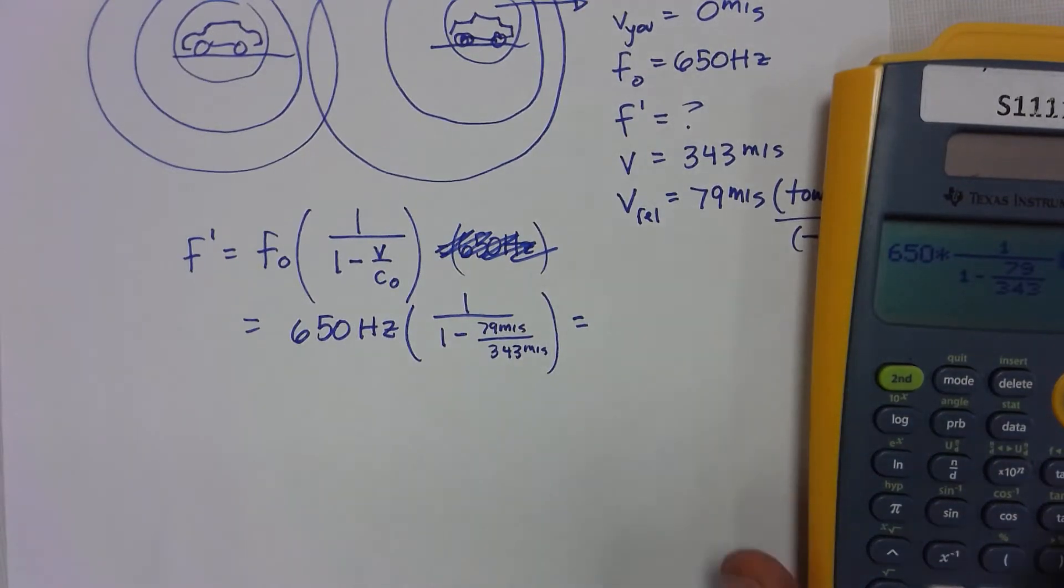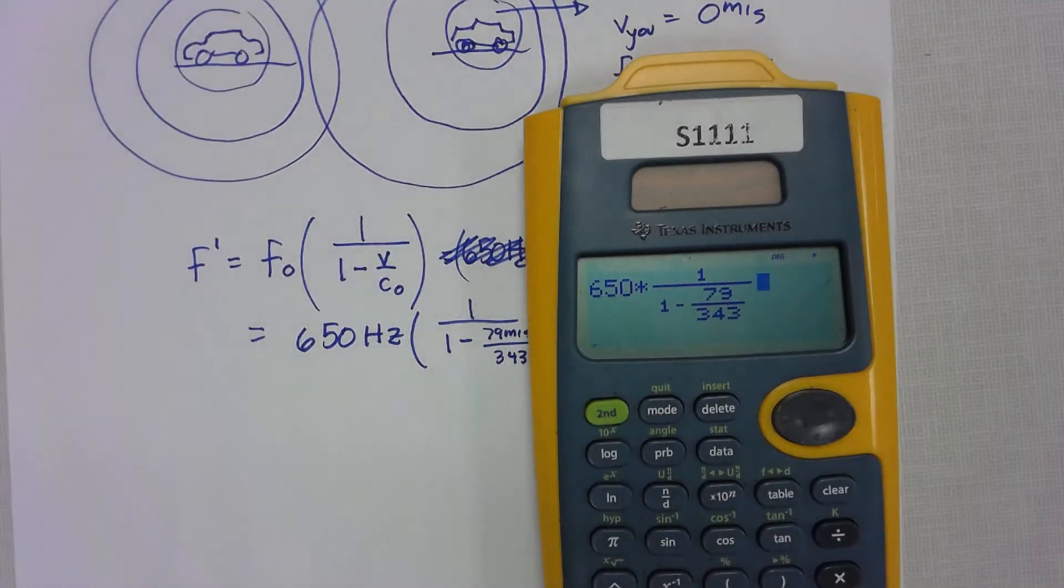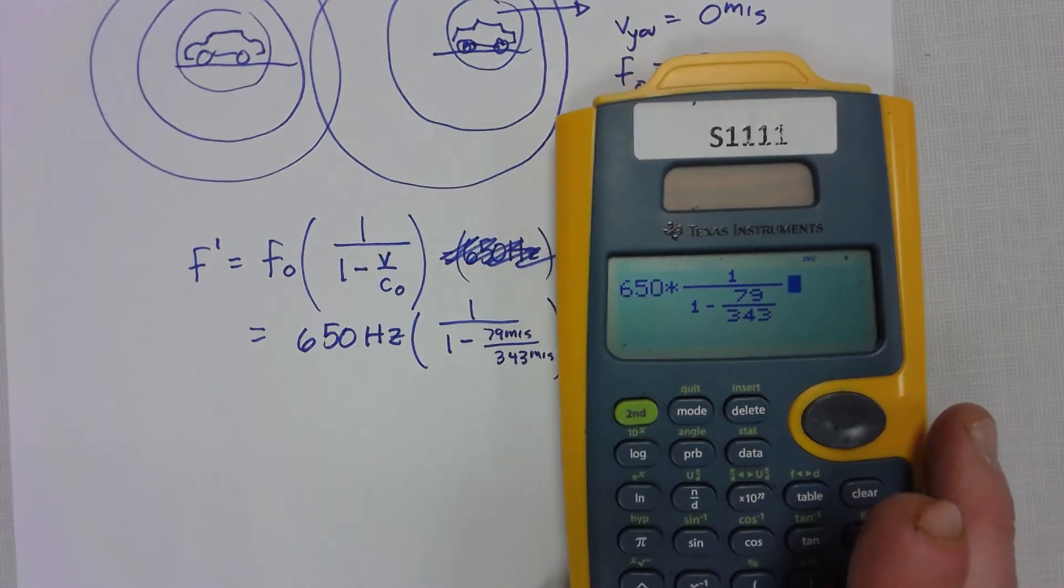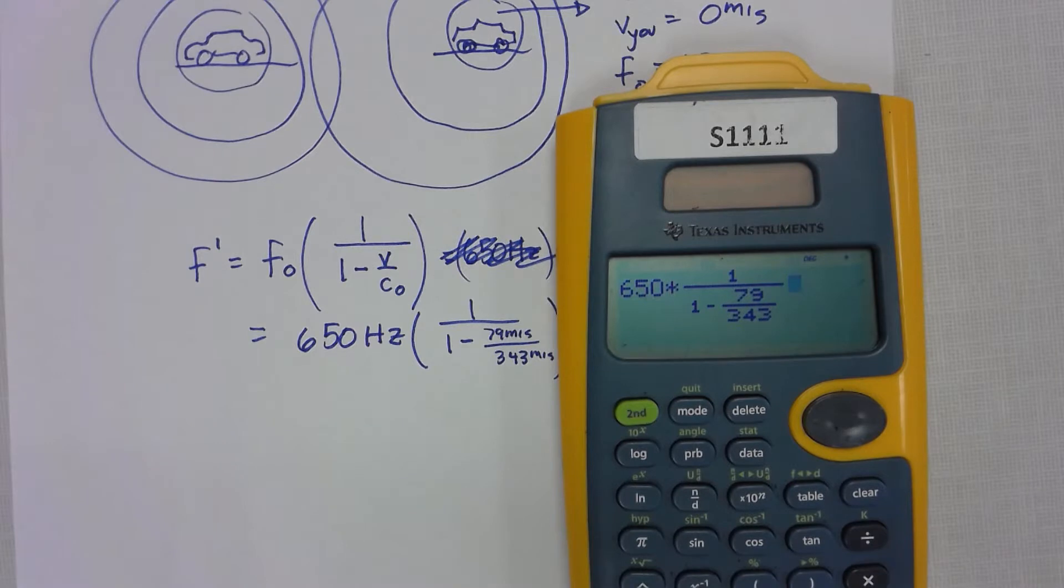Okay, so I took a moment here to type this into the calculator using math type because I really want to convince you that this is the best way to do it when you're using this equation. This N over D button is really the best way to do this because you can make it look on your calculator exactly like it looks on your paper, so you're sure you don't have any problems whatsoever.